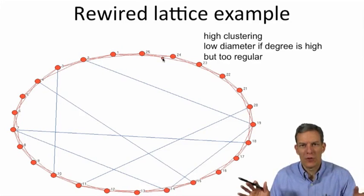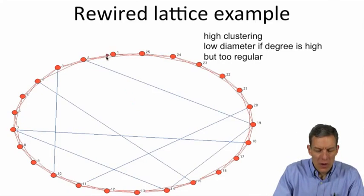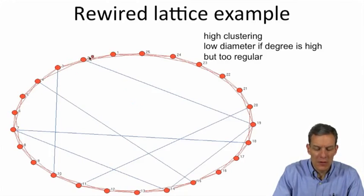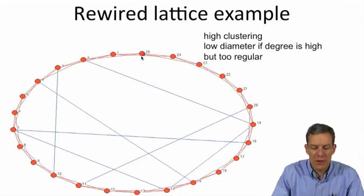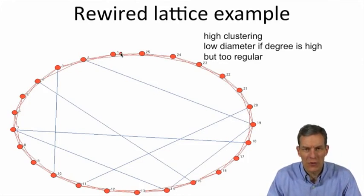You're connected to your two neighbors. In terms of this original lattice, this gives you very high clustering. So 1 is connected to both 2 and 3, and 2 and 3 are connected to each other. 1 is connected to 2 and 25, and 2 and 25 are connected to each other, and so forth. The clustering is high when you start.